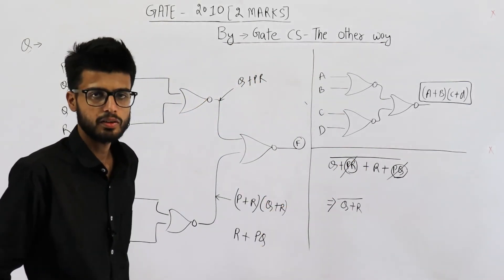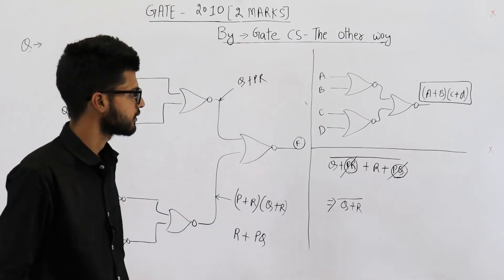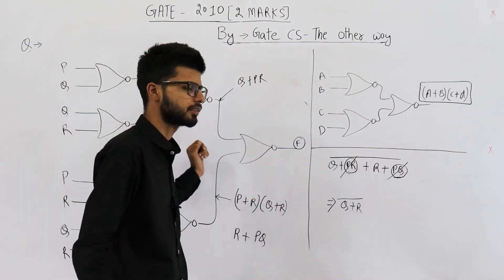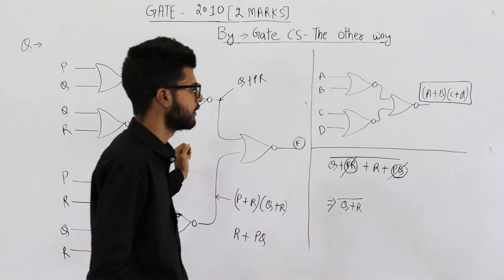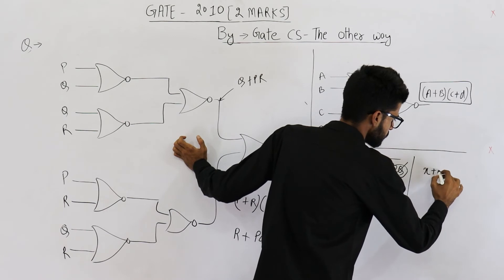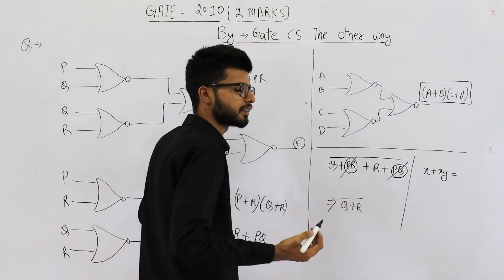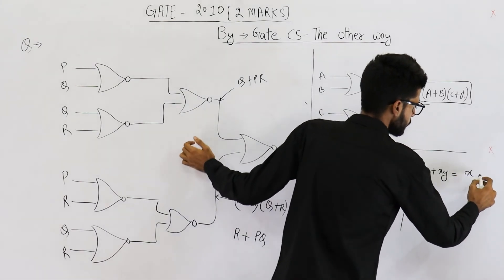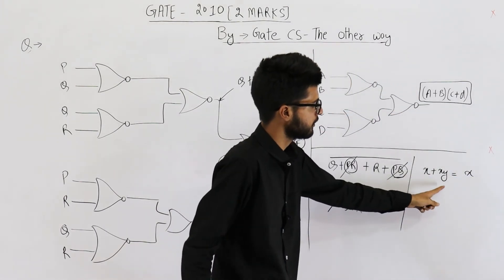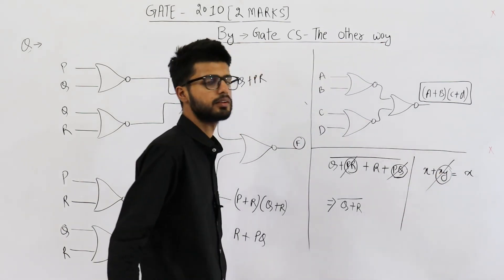So this is present in the options. Maybe it's option A, I don't remember. But this is the answer. How is this absorption law applied here? Let me show you. Absorption law is X plus XY. This is equal to X. So wherever you find X plus XY, you can just say this XY is redundant.